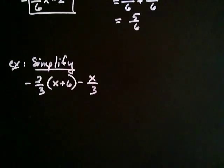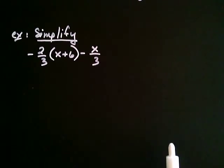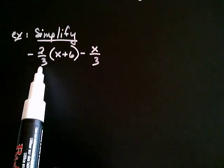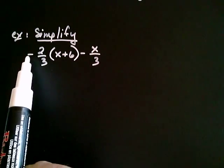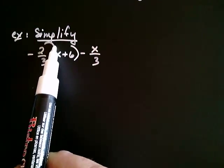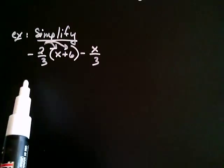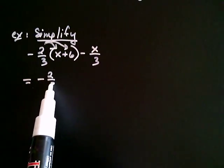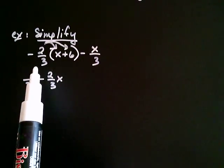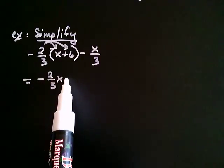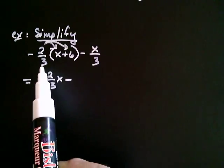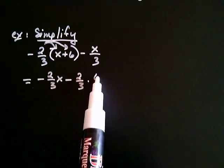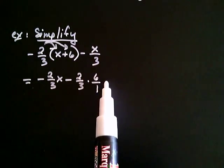This problem has a couple of interesting issues to address. Just like in the previous problem, the first thing we're going to do is distribute — distribute this negative two thirds. Remember, the negative goes with the two thirds upon distribution. So I draw in my little arrows: a negative two thirds times x is negative two thirds x. Then, a negative times a positive is going to be a negative — negative whatever I get when I multiply two thirds and six over one together. And I still have the negative x over three there; that hasn't changed.